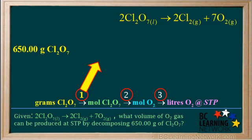The first step is to convert grams of Cl2O7 to moles of Cl2O7. So we write a conversion factor with grams of Cl2O7 on the bottom, so this unit can be cancelled.